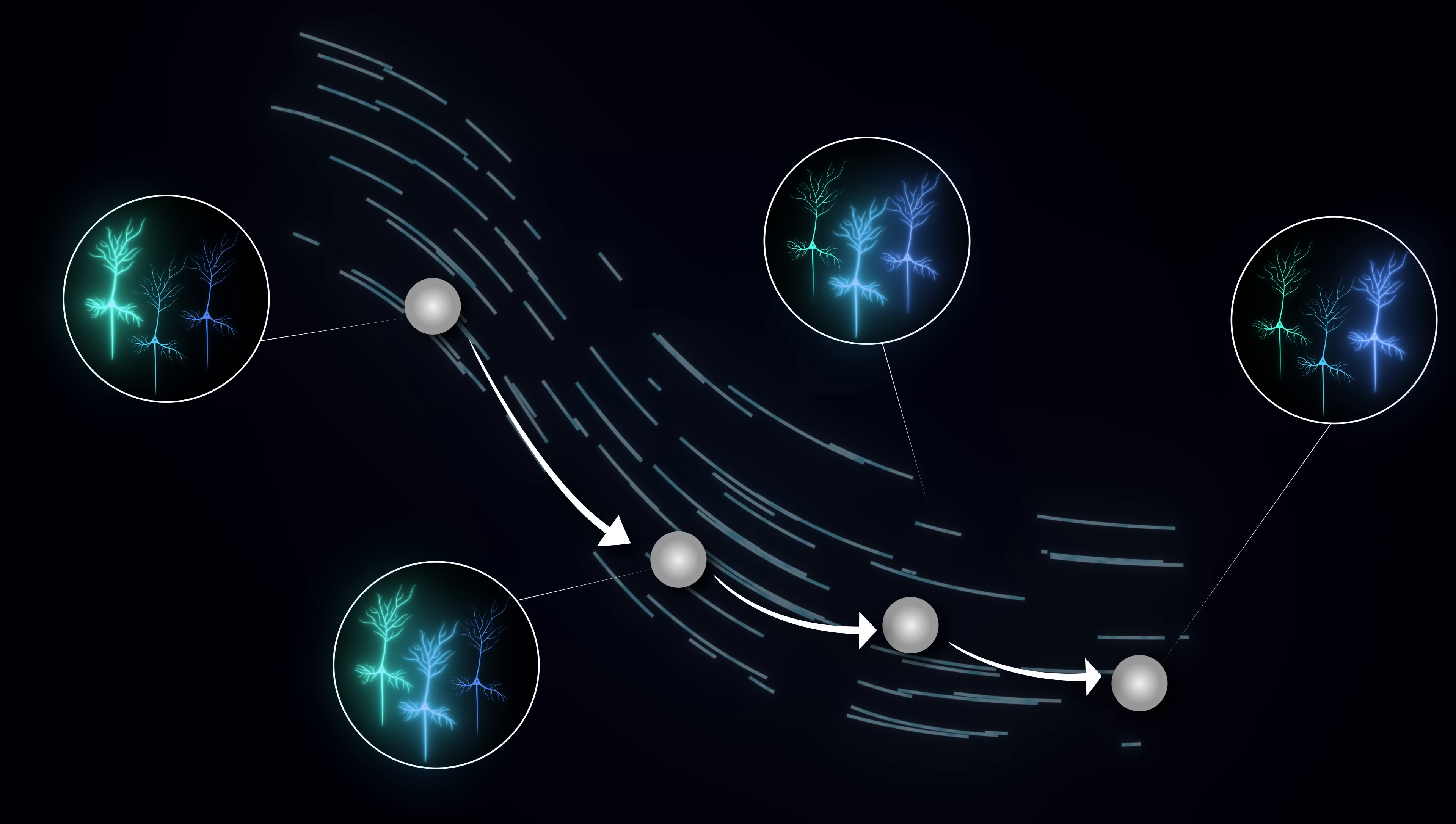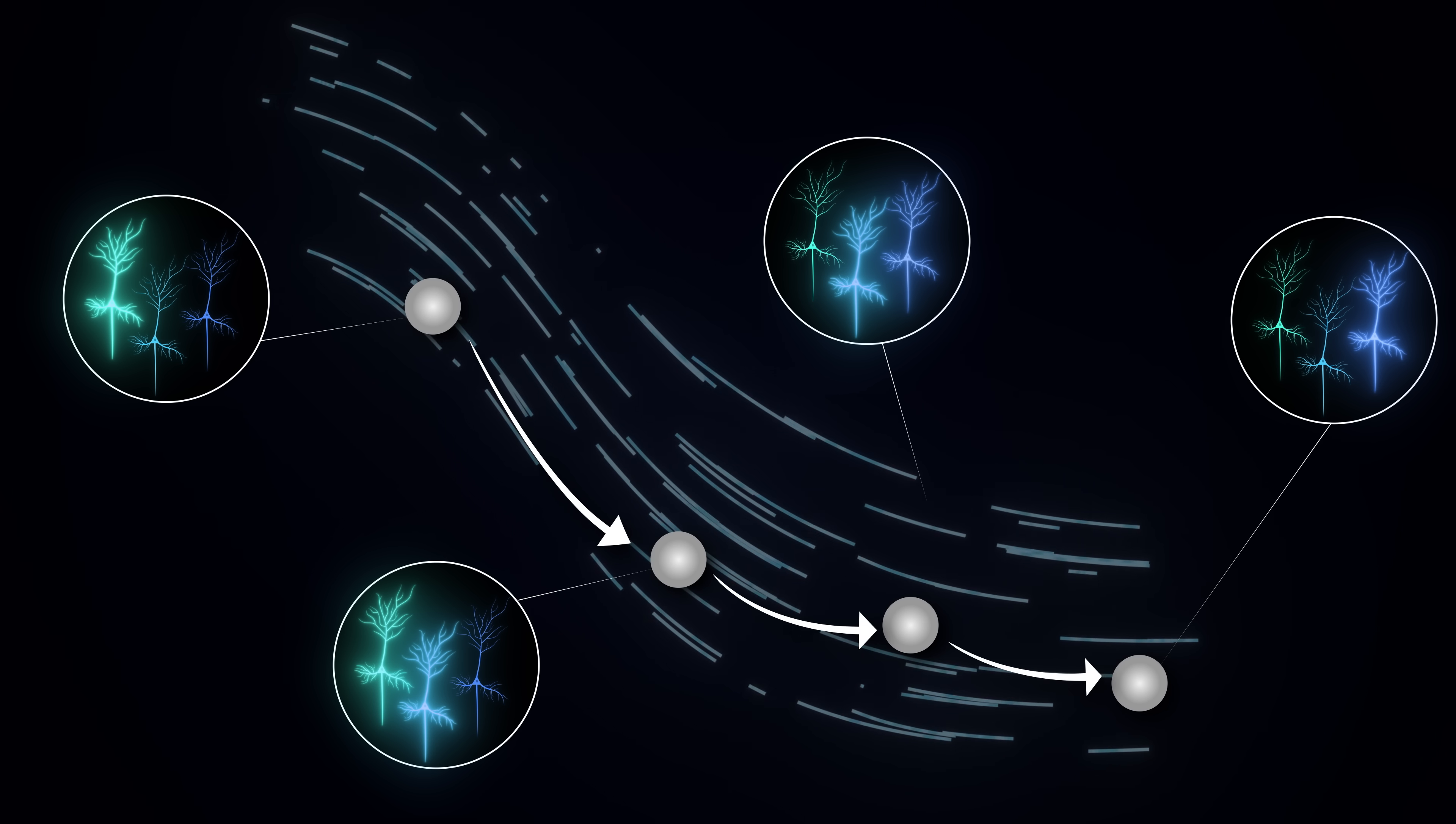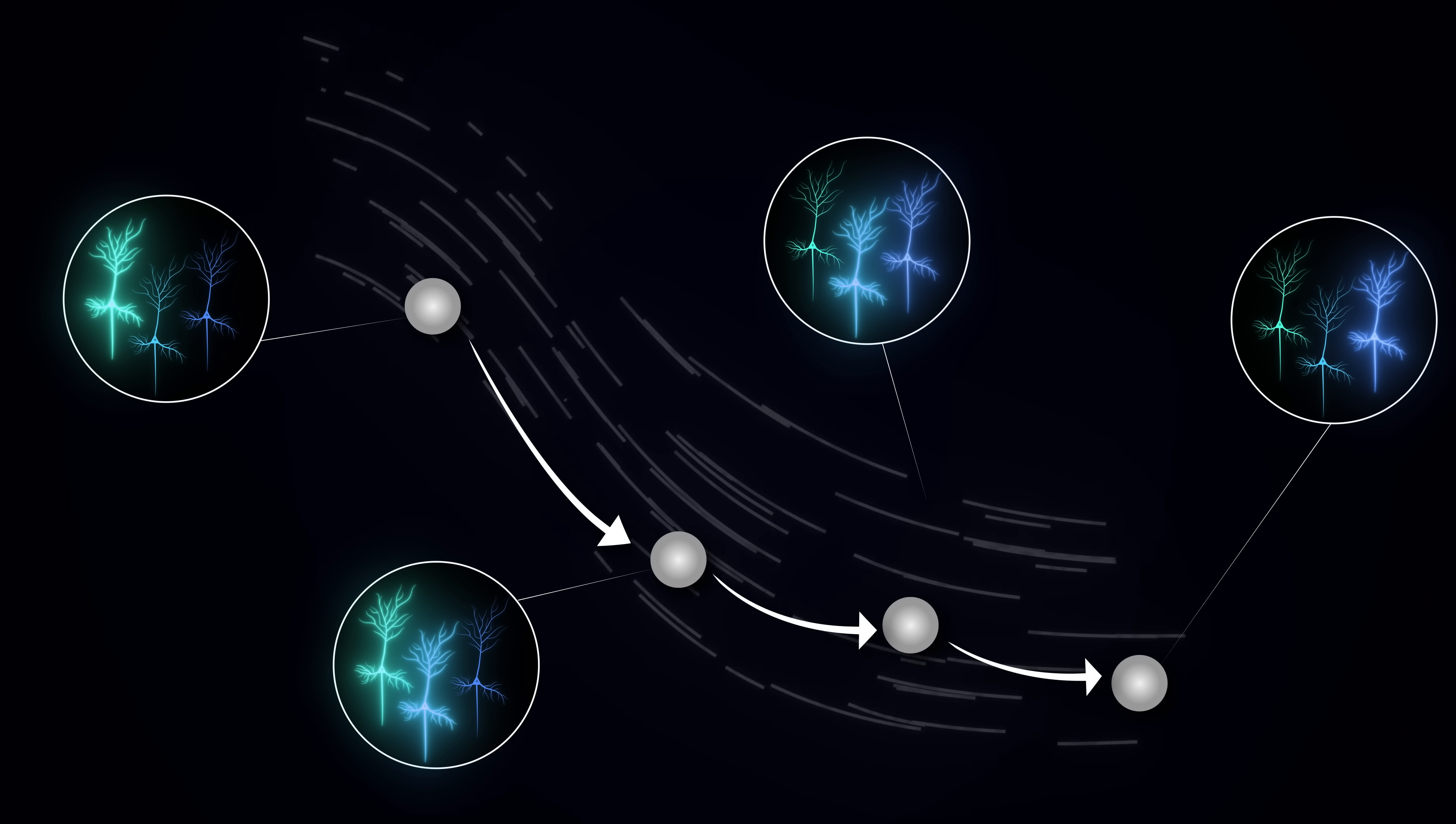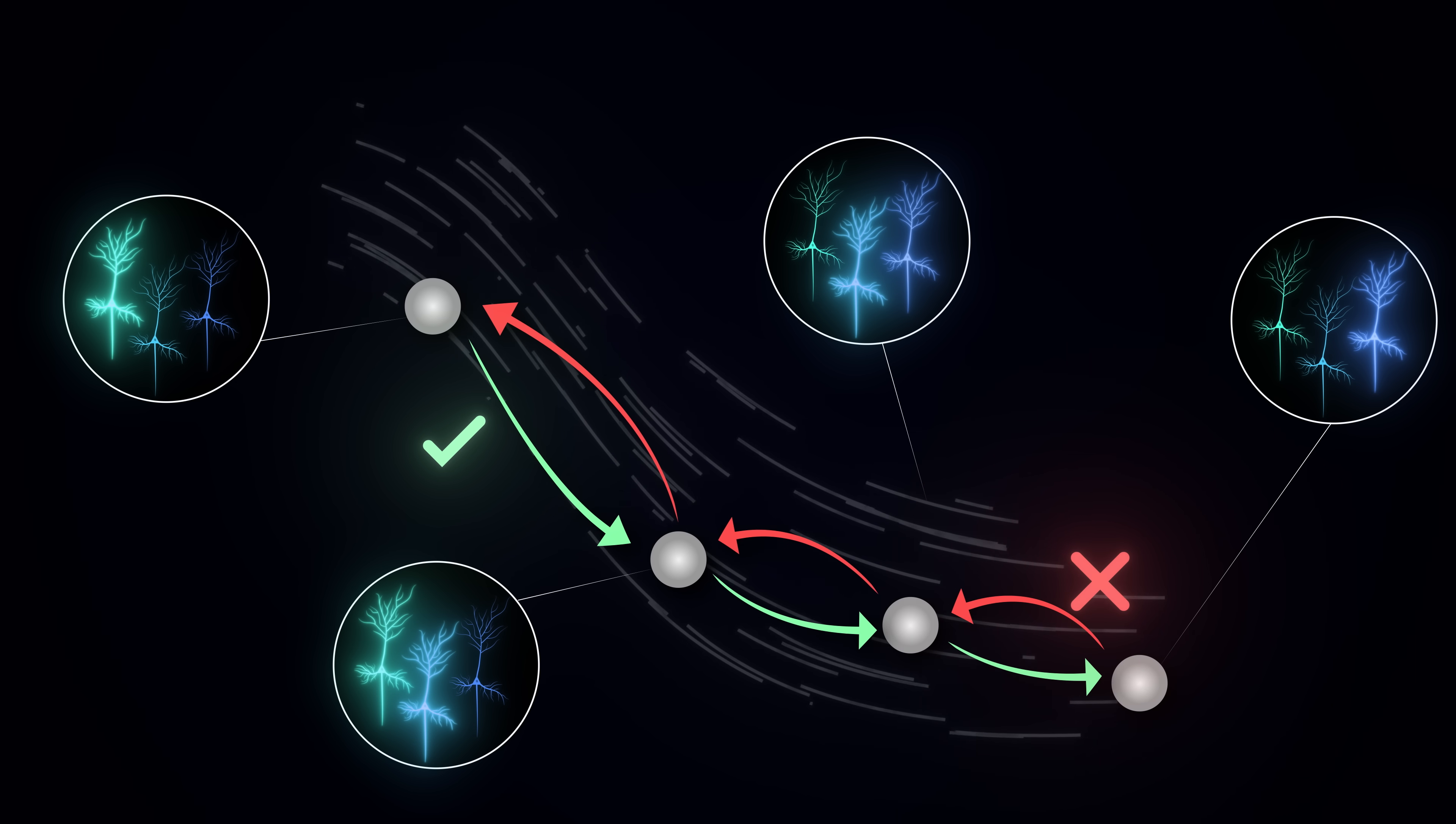This raises a fundamental question. How flexible are these patterns? When learning a new skill, can our brain generate any sequence of neural activity it needs to? Or are some sequences much harder than others, or even outright impossible, because of how our neurons are connected and their underlying biophysics?